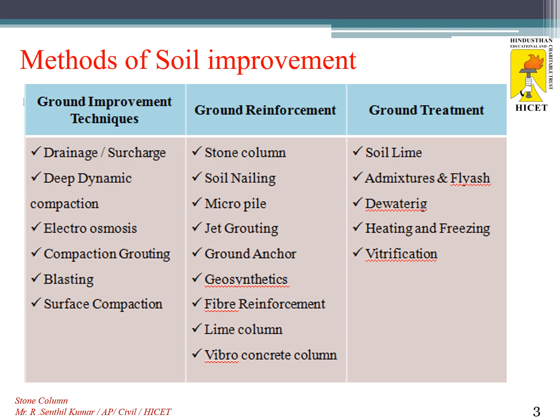Methods of soil improvement: the first category is ground improvement techniques, which includes several techniques for cohesive and cohesionless soils — drainage or surcharge, deep dynamic compaction, electro-osmosis, compaction grouting, blasting, and surface compaction. The second category is ground reinforcement, which includes stone columns, soil nailing, micropile, jet grouting, ground anchors, geosynthetics, fiber reinforcement, lime columns, and vibro concrete columns.